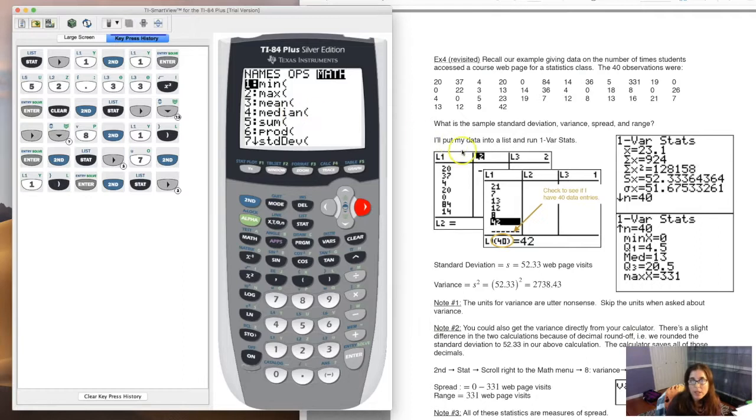The last thing I was asked for was the spread and the range. I would get that from the min and max of one var stats. So we've got my spread, two numbers, and my range, one number, and they all have units hanging out on them. All of these statistics are measures of spread. In that SOCS acronym, that second S, you've got four of them right here: standard deviation, variance, spread, and range.